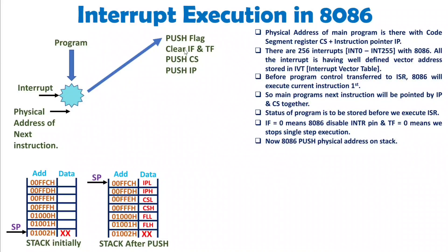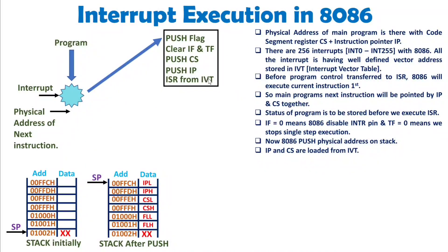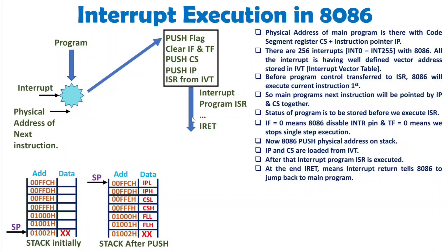Once the flag and physical address of the main program are saved on the stack, 8086 loads the physical address of the interrupt service routine (ISR) from the interrupt vector table — I will explain exactly how in a separate video. The new IP and CS are loaded from the IVT, and 8086 begins executing the interrupt program. At the end of the ISR, IRET — interrupt return — is executed, signaling that the interrupt service is complete.